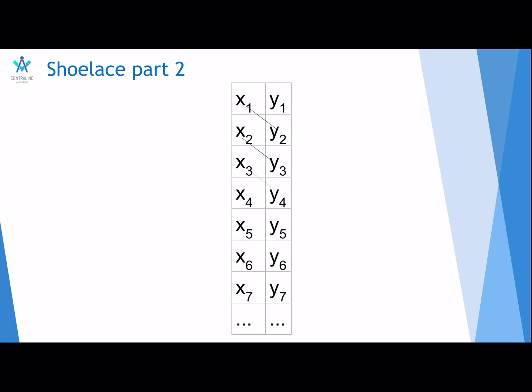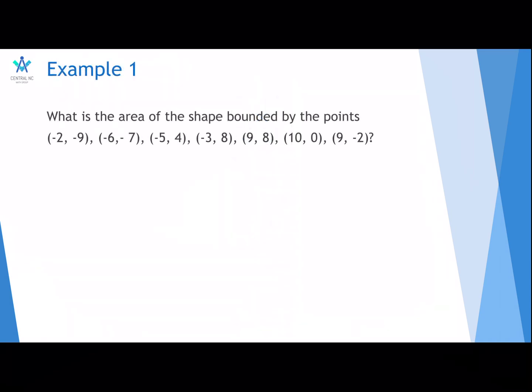This is why it's called the Shoelace theorem. So, you have these points. You connect them like this, and that, and then these, you sum all of these. And then you draw the other lines like this. And you connect, add all of these, and you subtract one from the other. It looks just like a shoelace, which is why it's called the Shoelace theorem.